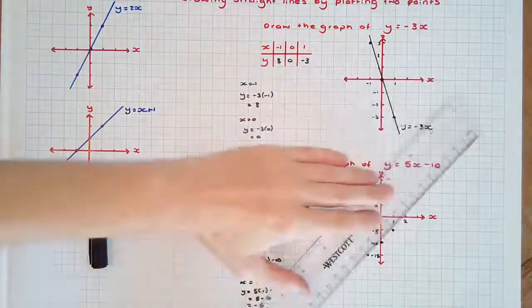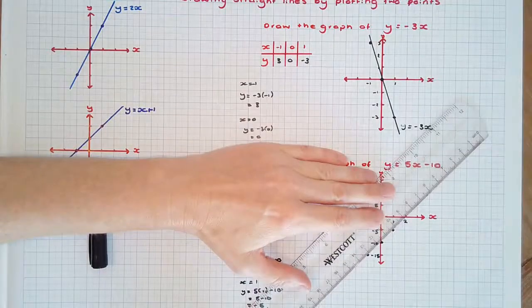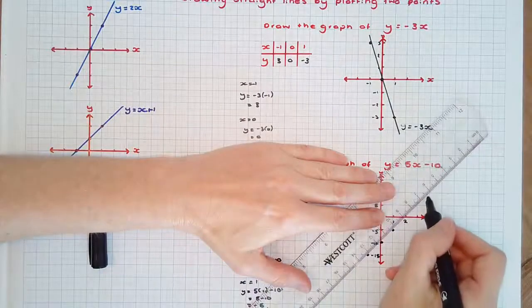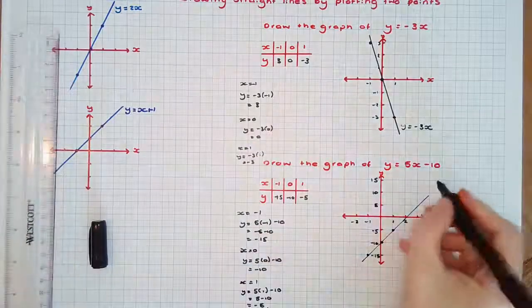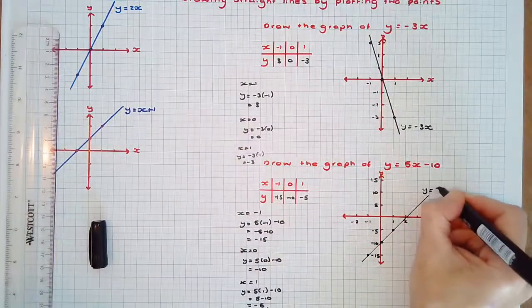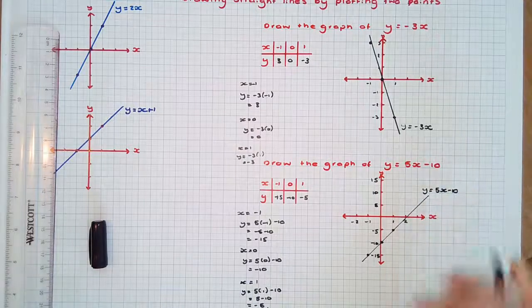Connecting these points, and finally labeling the graph, y equals 5x minus 10.